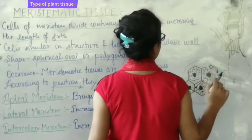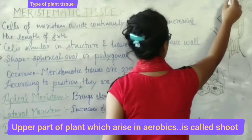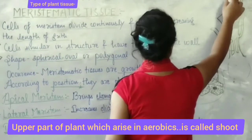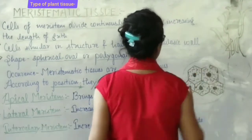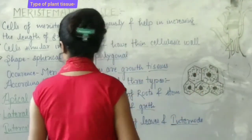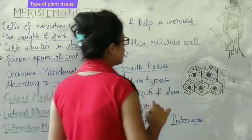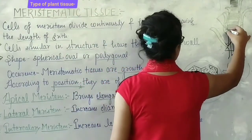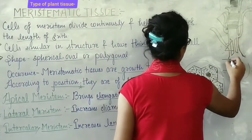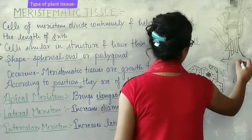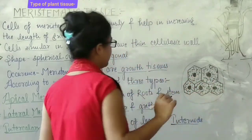Apical meristematic tissue is present at the root and stem tips and is responsible for increasing the height of the plant. Lateral meristematic tissue is on the sides and increases the girth of the plant. The last is intercalary meristematic tissue.